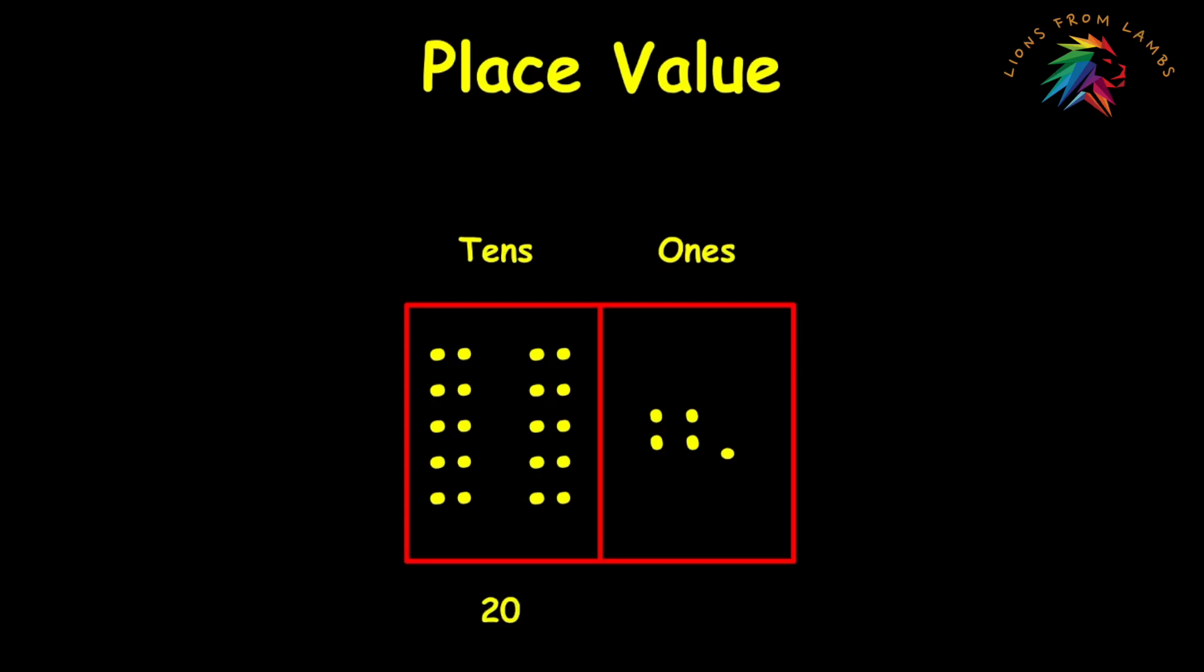Okay. So now we have 20. There's the numerical representation below the pictorial representation. And there's five in the ones place. So when we add those two together, 20 plus five is 25. That's where your place value comes into play.